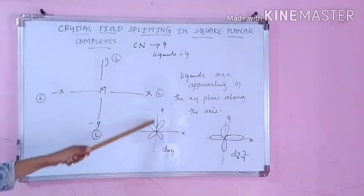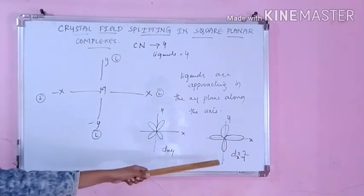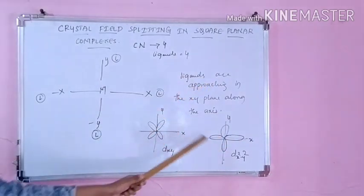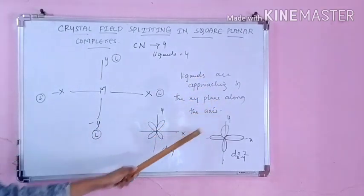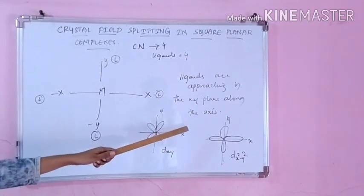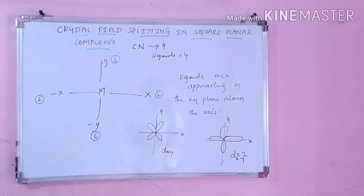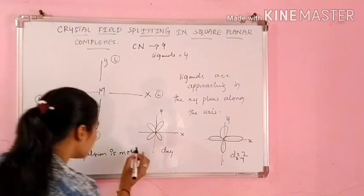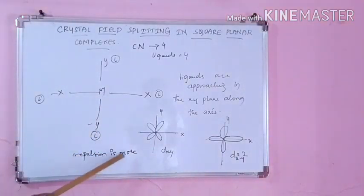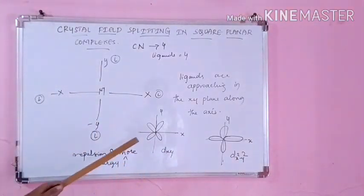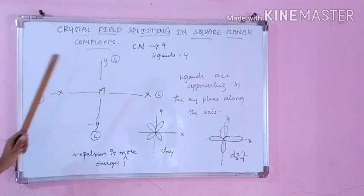This first orbital is in the xy plane along the x-axis and y-axis. Here also you can see it is along the x and y axes. So both of these are in the xy plane. In both cases, your ligands are approaching in the xy plane along the axes, so repulsion will be more. Your repulsion will be maximum. Repulsion is more since they are lying in the xy plane, and if repulsion is more between the orbitals and the ligands, energy will increase. So these both will have the highest energy in the splitting.